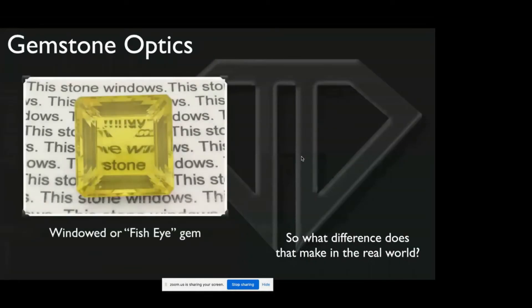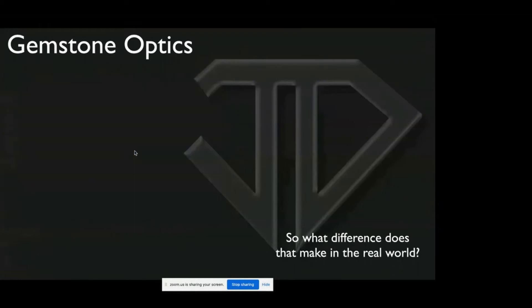Okay, so this is a windowed fisheye gem. This is an illustration when you can see through the gem and read through it—that's a window, sometimes called a fisheye because a dead fish will sort of have a shiny part around the eye and a dead spot in the middle. Not a very attractive term. Windows or fisheyes are not something you want.